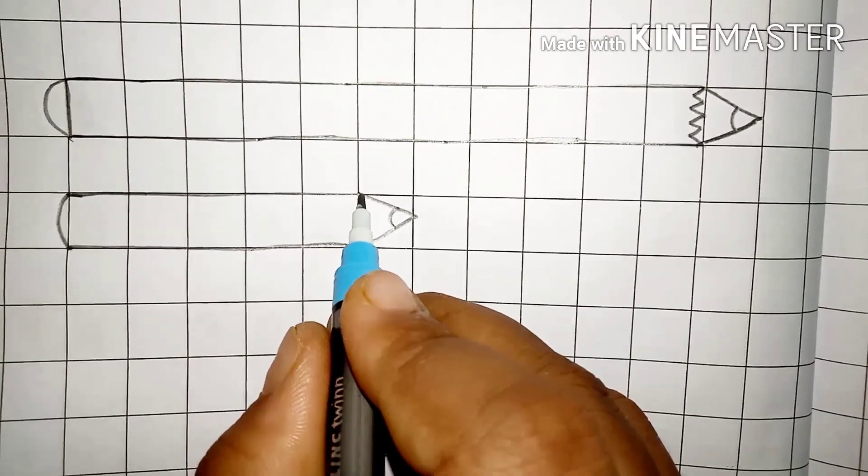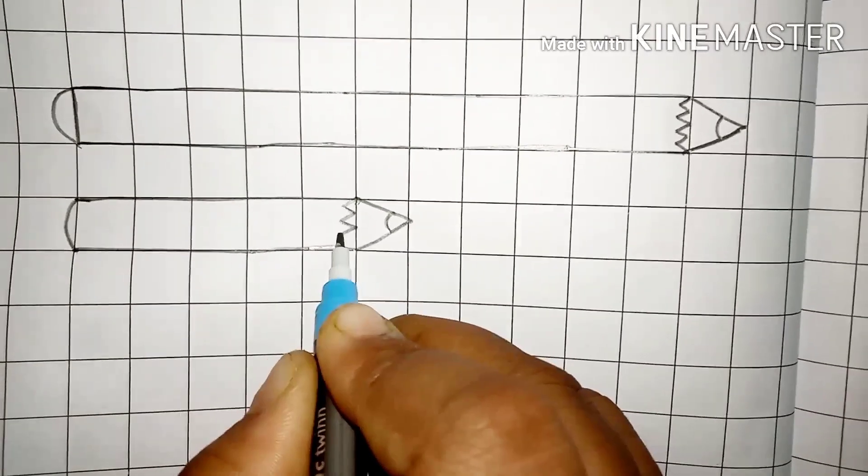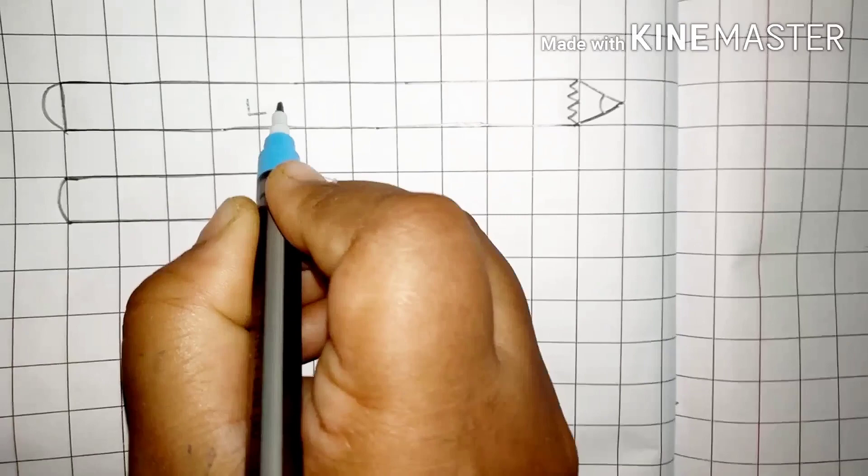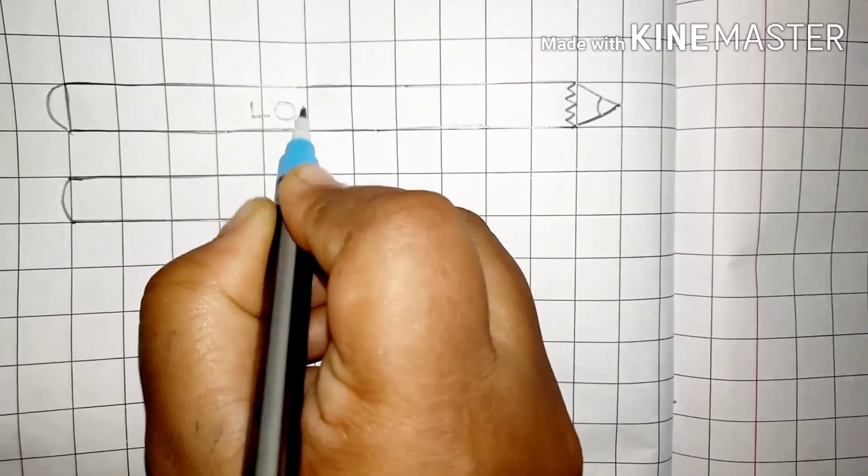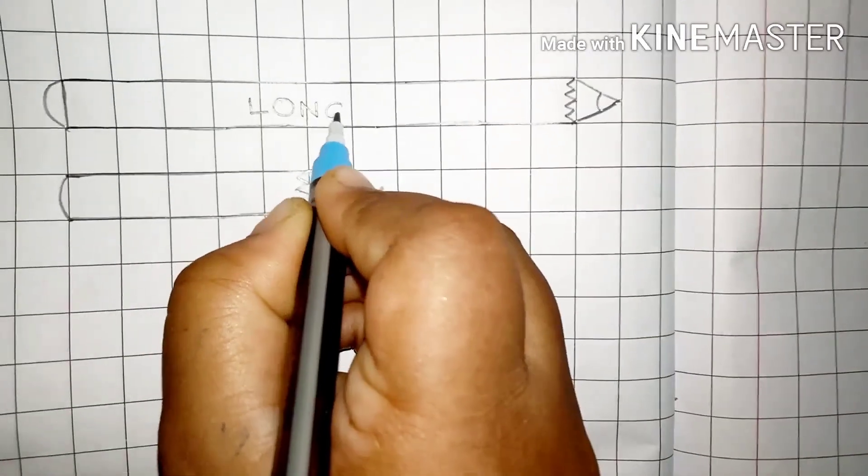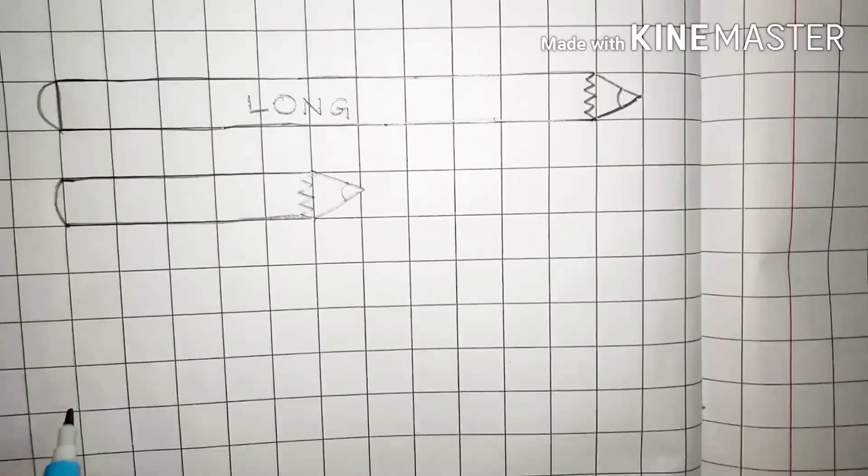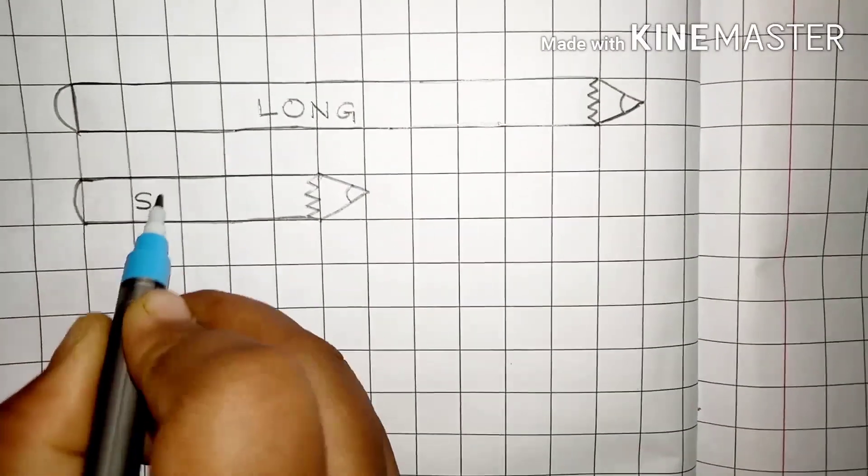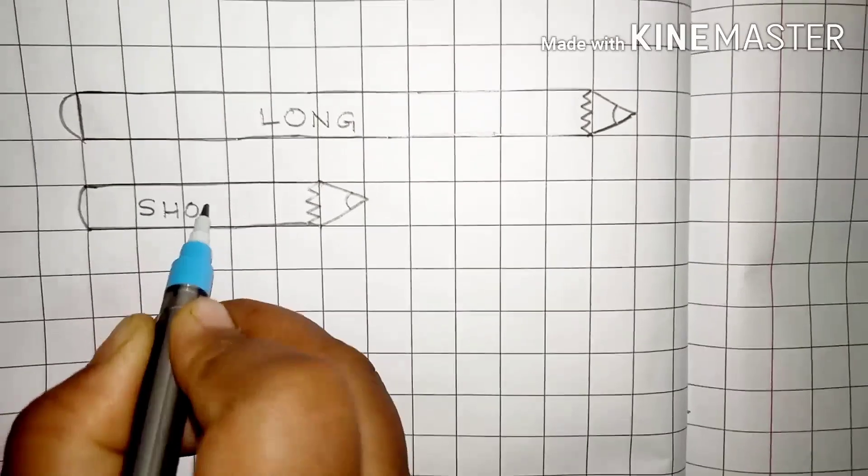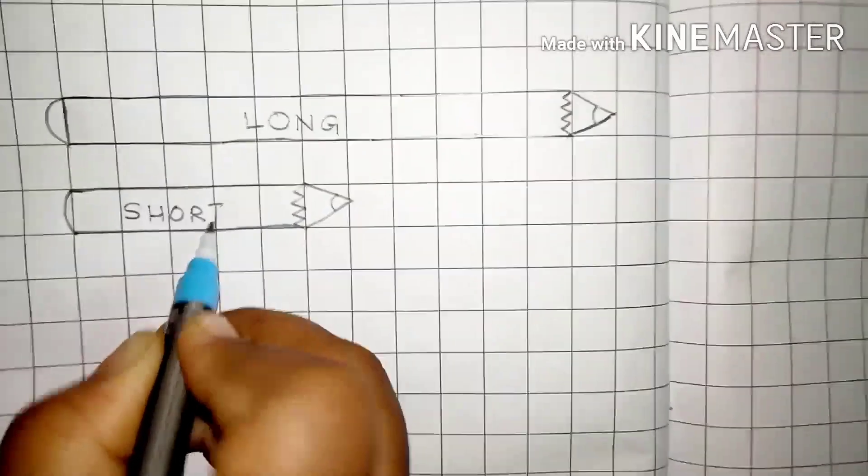Children, can you see the difference between the size of the two pencils? Then, right here LONG on this pencil. This is a long pencil. And then, right here short. SHORT.